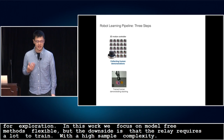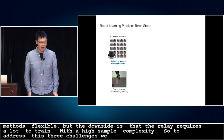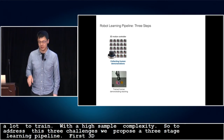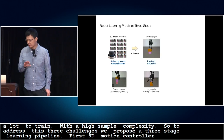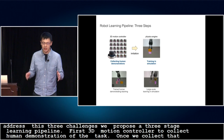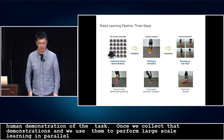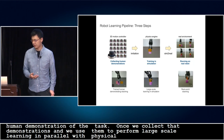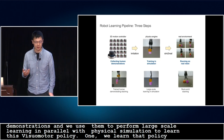To address these three challenges, we propose a three-stage learning pipeline. First, we use a 3D motion controller to collect human demonstrations of the task. Once we collect the demonstrations, we use them to perform large-scale learning in parallel copies of physical simulation to learn a visual motor policy. Then, once we learn the policy, we transfer it using sim-to-real policy transfer techniques to deploy on the real robot.